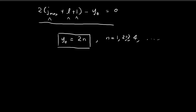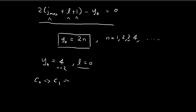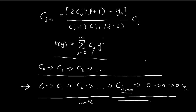Let me illustrate with an example. If we choose y₀ equal to four, this corresponds to n equal to two. If we're dealing with l equal to zero — which came from the spherical harmonics — we start generating coefficients from c₀, get c₁, and then want to find c₂.